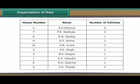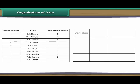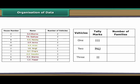Let us now organize the RWA data that we had discussed in the beginning. Make three columns: vehicles, tally marks and number of families. Specify one, two and three under vehicles one by one. Under tally marks, denote families with specific number of vehicles by tally marks against appropriate options. Now count the tally marks against every option of vehicles and record it under number of families.